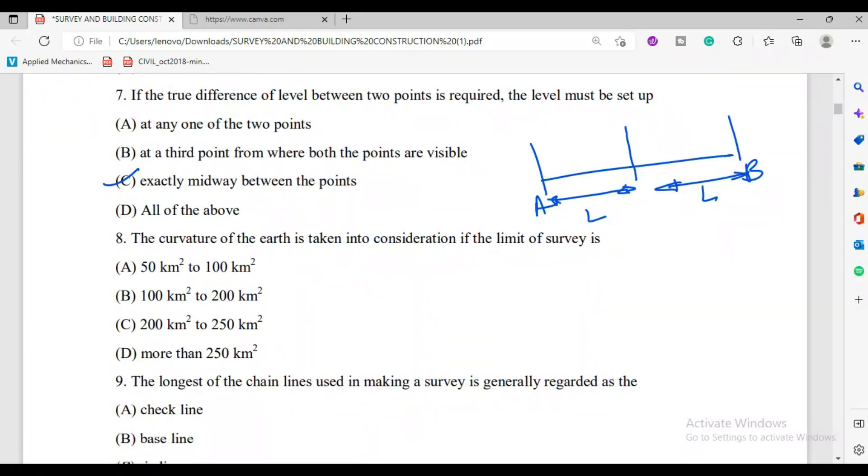The curvature of the earth is taken into consideration if the limit of the survey line is 50 to 100 km, 100 to 200, 200 to 250 km, or more than 250 km. If it is larger than 250 km square, then we have to consider the earth's curvature. Otherwise, surveying is like plane table survey. So option D is correct.